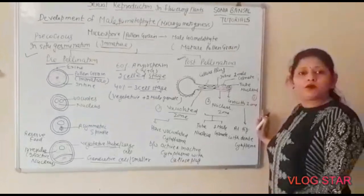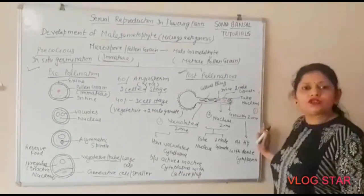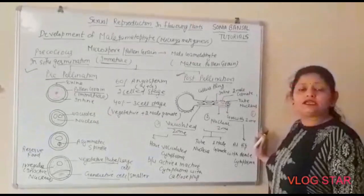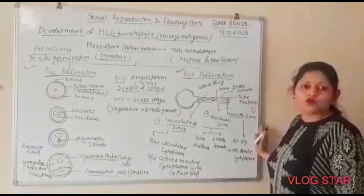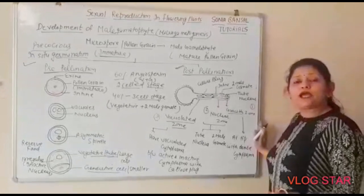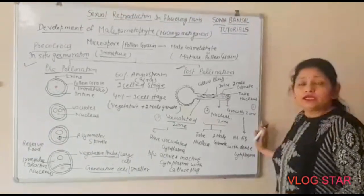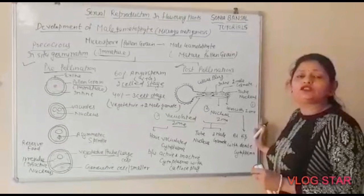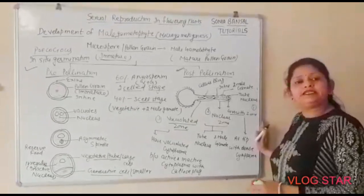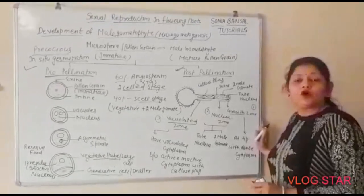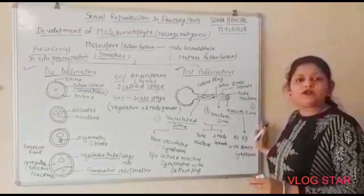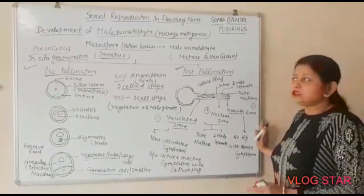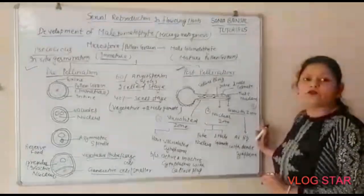After pollination, compatible pollen grains help in the formation of the pollen tube. This tube contains three zones. As the pollen tube grows through the style, two nuclei degenerate. Only the two male gametes participate in fertilization. This concludes the development of male gametes from pollen.